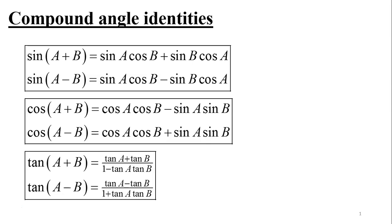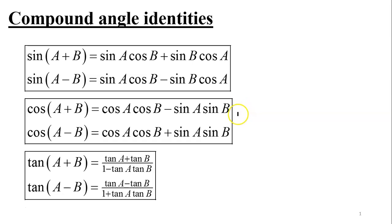Before we get to the examples and how we could potentially use these identities, we're going to start with introducing them. Let's start with the compound angle identities of cosine — what happens when we add and subtract two angles inside cosine.